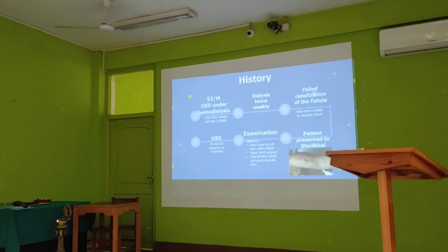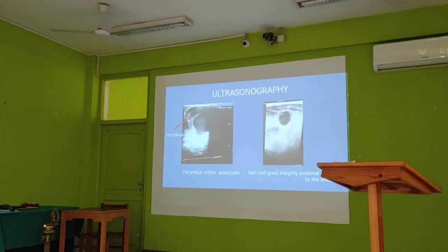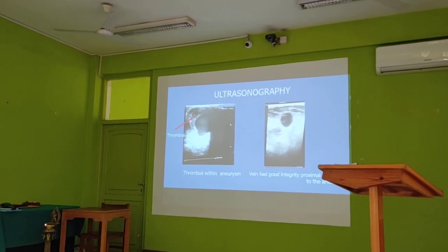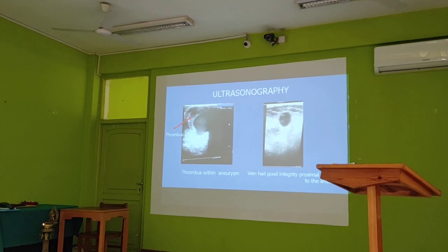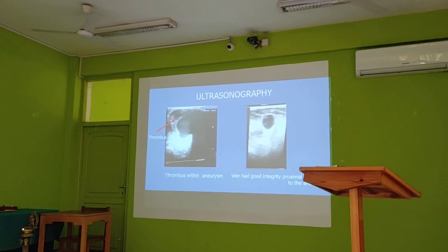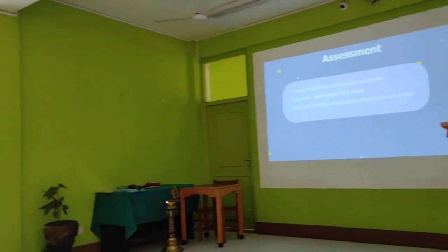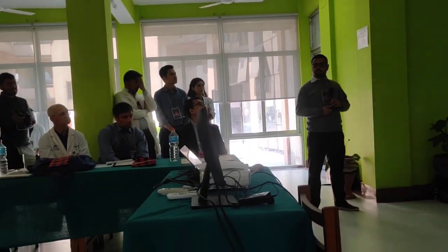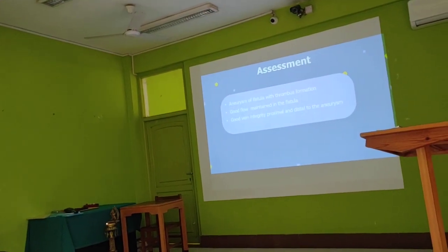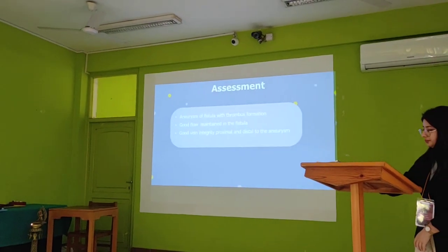We did an exercise to look for aneurysm and thrombus. Here we can see the thrombus within the aneurysm, and the distal part and the proximal part had good integrity to the aneurysm. Our assessment was aneurysm of the fistula with thrombus formation, with good flow maintained in the fistula and good patency proximal and distal to the aneurysm.